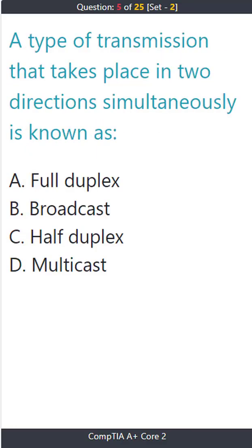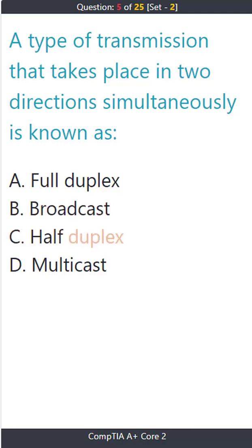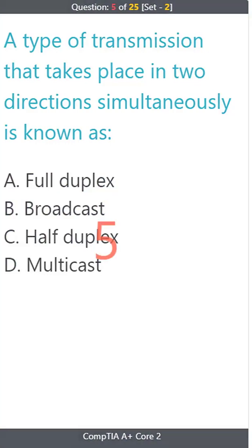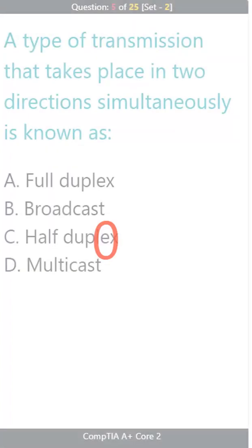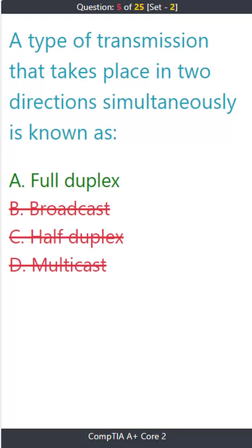Question 5. A type of transmission that takes place in two directions simultaneously is known as: A) full duplex, B) broadcast, C) half duplex, D) multicast. The correct answer is A) full duplex.